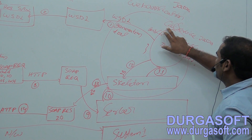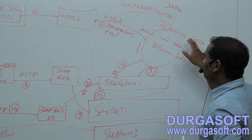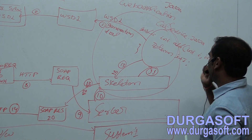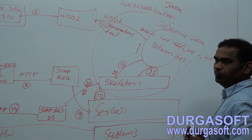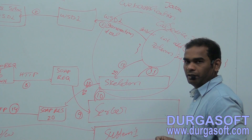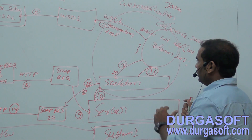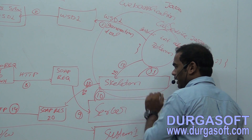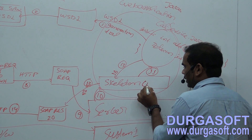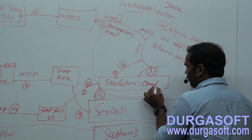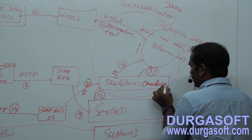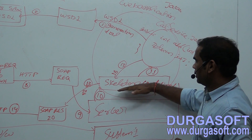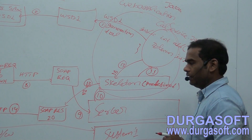Here I am writing one service class called calService.java. Inside this we have one method: public int add(int i, int j), and we are returning i plus j. Now inside this web application, as we discussed, we will have one skeleton. Skeleton is a predefined class. We will discuss the skeleton in more detail later.